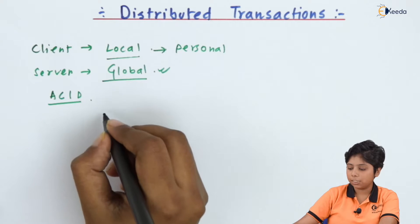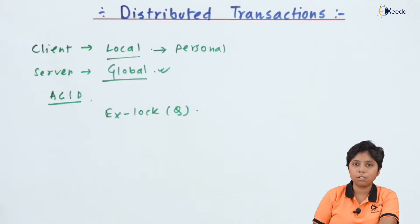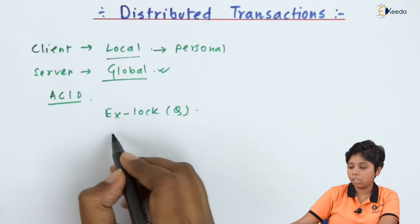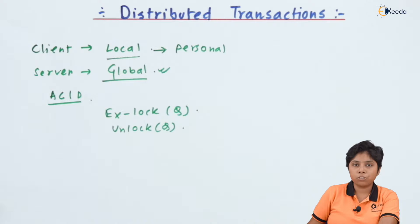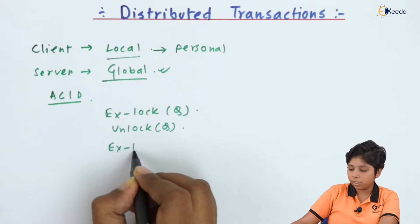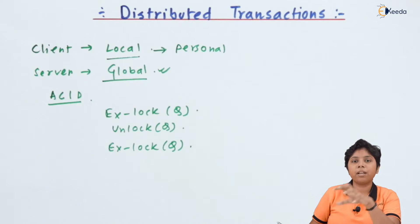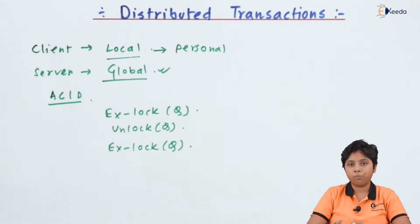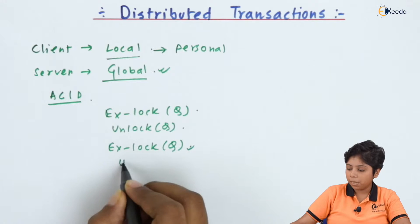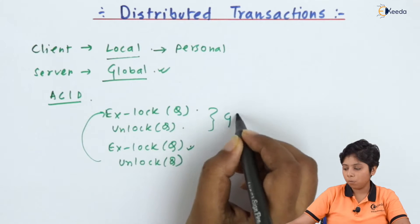If a global transaction holds an exclusive lock on a particular data item, then the local transactions cannot access the database until the global transaction releases that item. Conversely, when there is an exclusive lock on a local transaction and data is moving through the network, the global transaction can unlock that exclusive lock so it can put an exclusive lock in global mode.